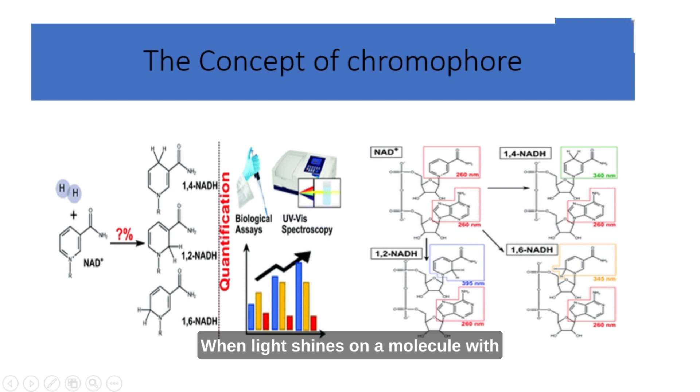When light shines on a molecule with a chromophore, the chromophore absorbs specific colors or wavelengths of light while reflecting others. The absorbed light energy causes the electrons in the chromophore to jump to higher energy levels. The specific structure and arrangement of atoms in the chromophore determine which light colors it can absorb and which ones it reflects. Different chromophores have different absorption patterns, so they appear to us as different colors.